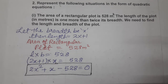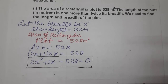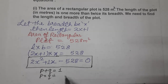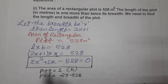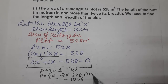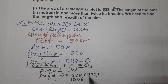That is middle term split. Let's start. We need two numbers such that adding them gives b and multiplying gives a×c. The standard form is ax² + bx + c = 0. Here b is 1 and a×c is 2 × (−528) = −1056. So we need two numbers that add to 1 and multiply to −1056.